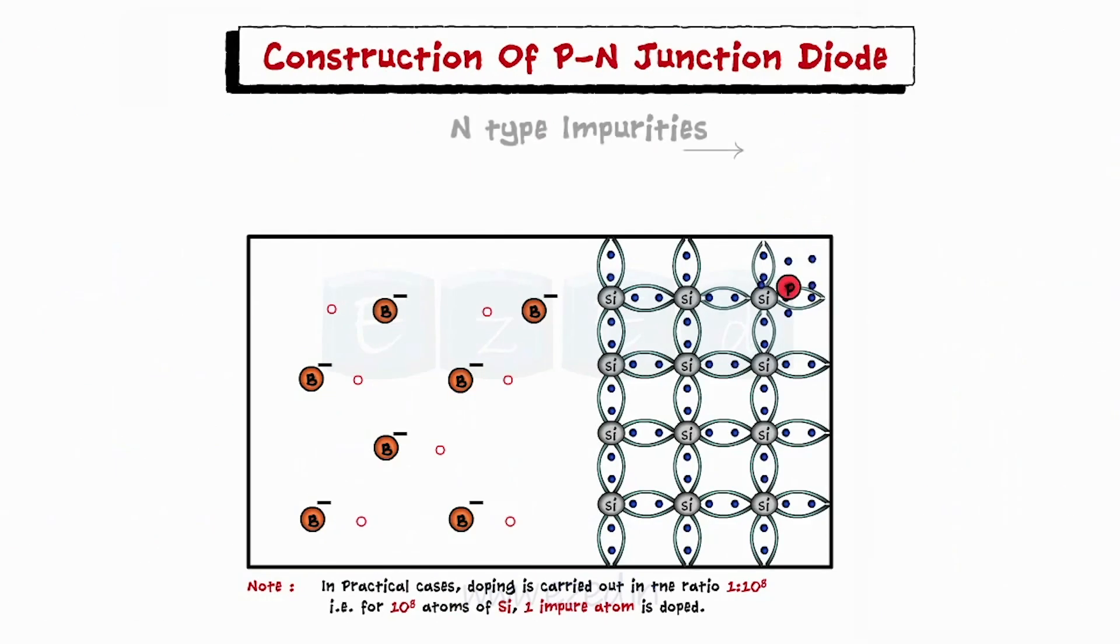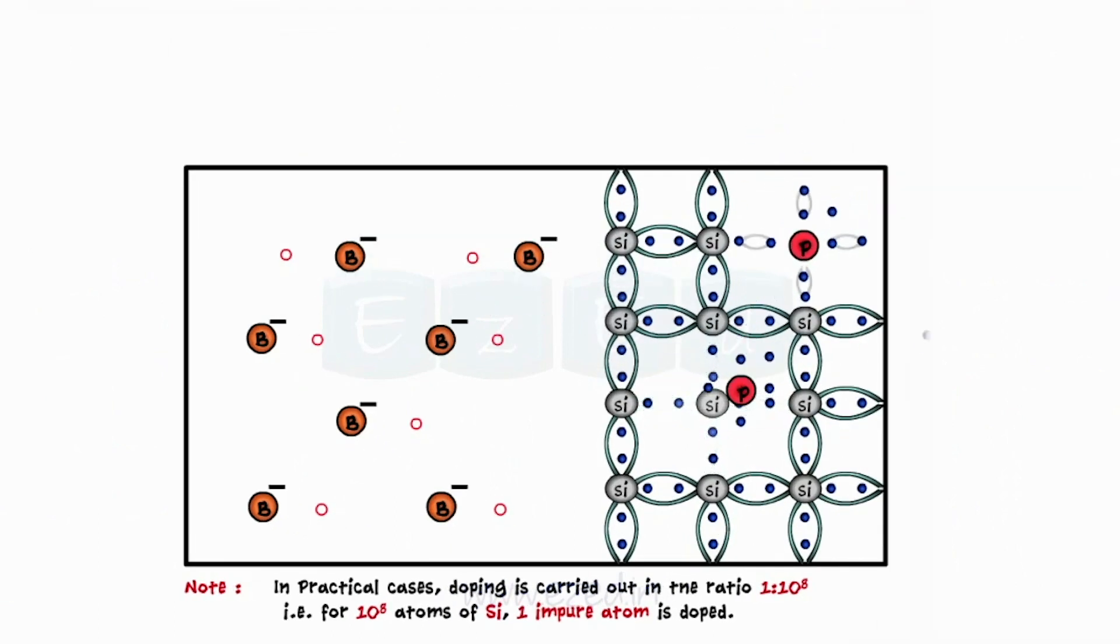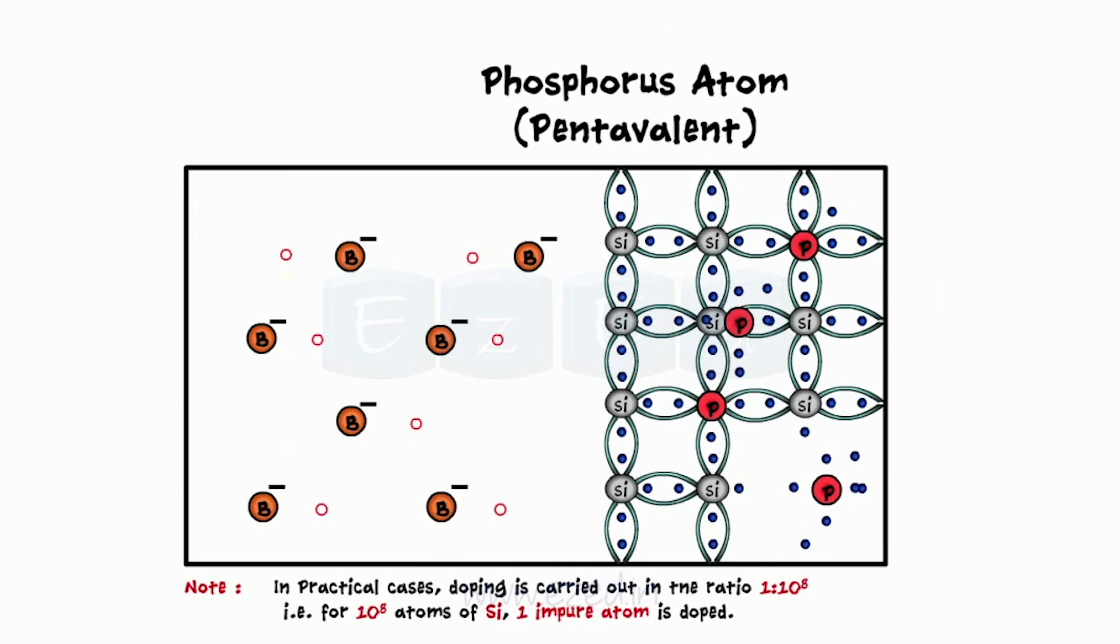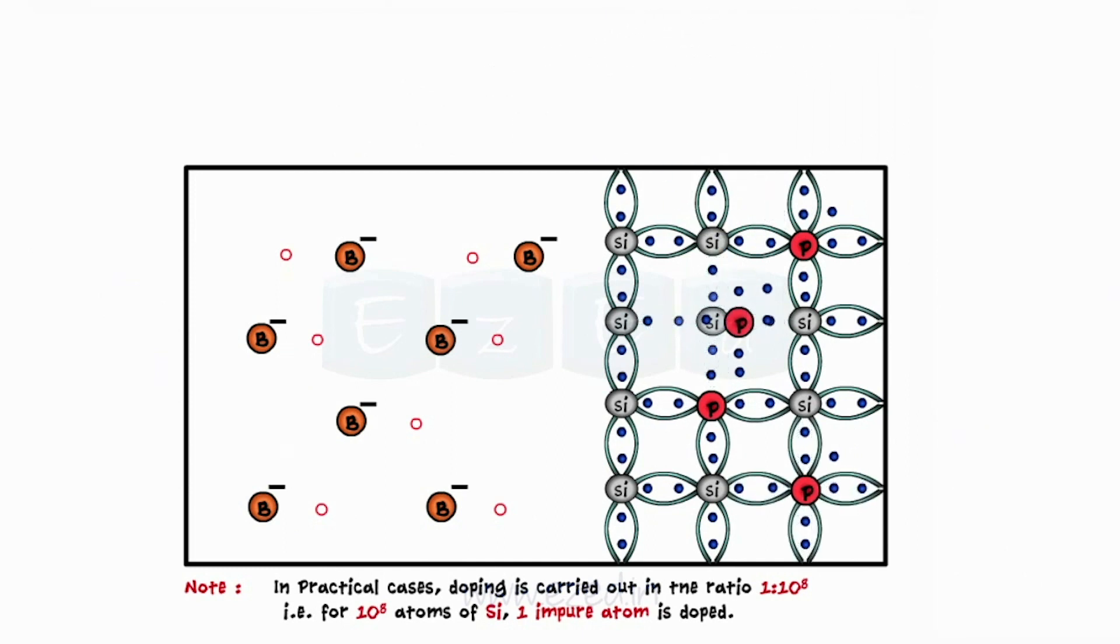The N-type impurities are doped onto the other half of the same slice. When we add the pentavalent atoms like phosphorus to the silicon slice, they form four bonds with four neighboring atoms of silicon and we get one electron that remains free.